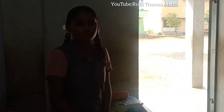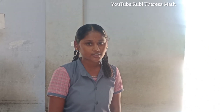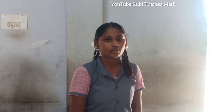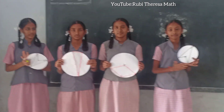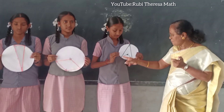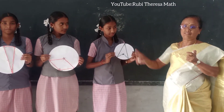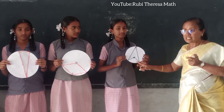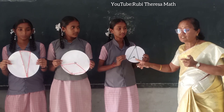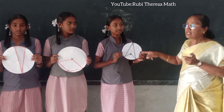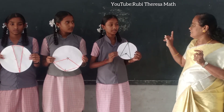The angle subtended by an arc at the centre is double the angle subtended by the same arc at any point on the remaining part of the circle. Very good. Awesome.